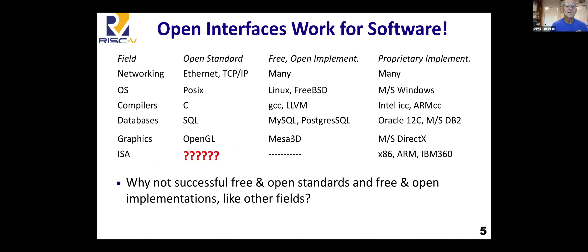So why doesn't this happen for software? Why isn't somebody buying your software and then you have to buy it from your competitor? Well, software came up with the idea of open standards — in networking, operating systems, compilers, and so forth. You have these open standards as the interface, and then you can have open implementations of those standards. Since the standard is open, many people can build it. There's both open source implementations and proprietary implementations. The key to having both options is having a standard. So if we've done this for all these other interfaces, why haven't we done it for the most important interface in the computer — instruction sets?